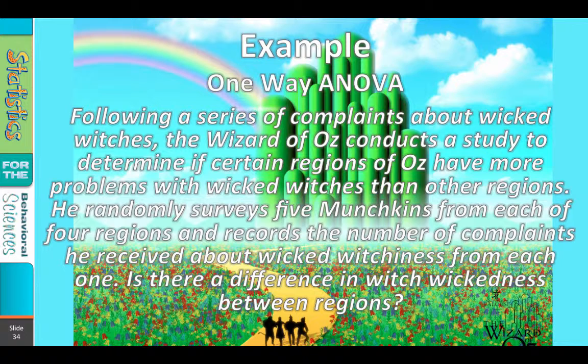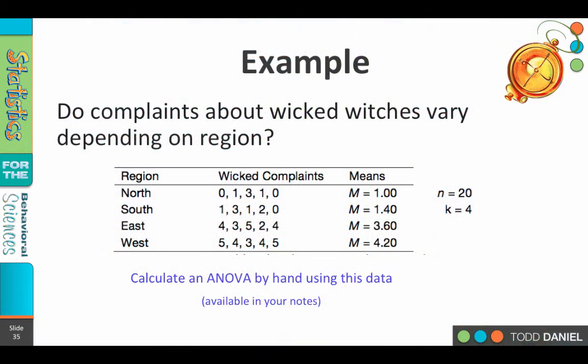He randomly surveys five munchkins from each of four regions and records the total number of complaints that he receives about wicked witchiness from each region. Is there a difference in witch wickedness between regions? We are going to find out.